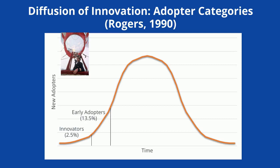Early adopters are better integrated into their social system and have the greatest potential for opinion leadership. They are avid consumers of technical information about products and services and like to have the latest and greatest thing, like my son's obsession with gaming equipment.